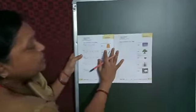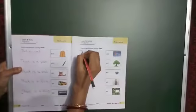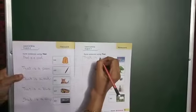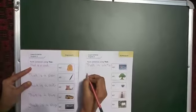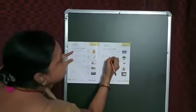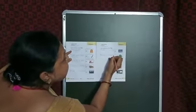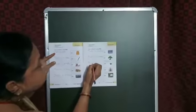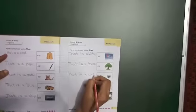In page number 91, form sentences using that. First picture is that is a kite. Second picture is that is a tree. Third picture is that is a cup.